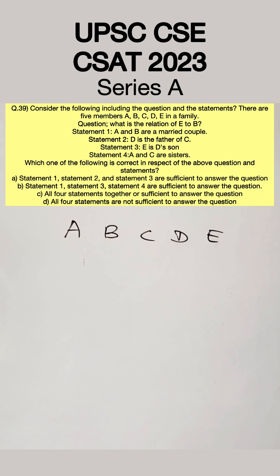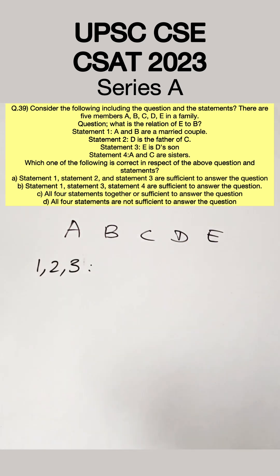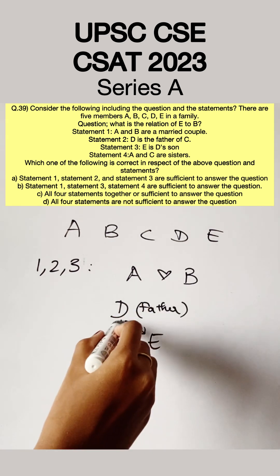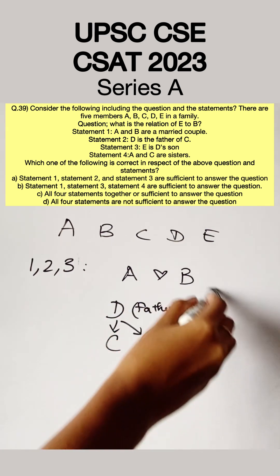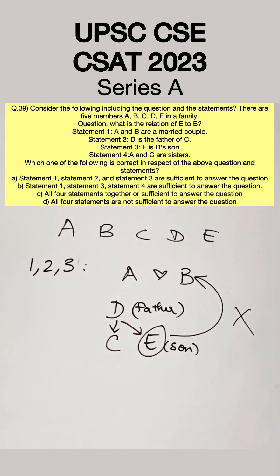Option 1 says statements 1, 2, and 3 are sufficient to answer the question. Statement 1 says A and B are a married couple. Statement 2 says D is the father of C. Statement 3 says E is D's son. With this, there is no connection established between B and E. Therefore, the first option can be eliminated.